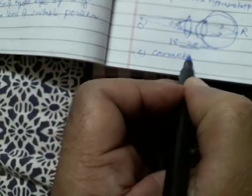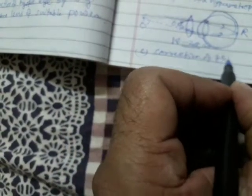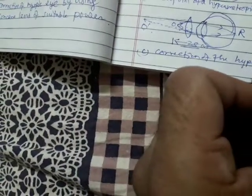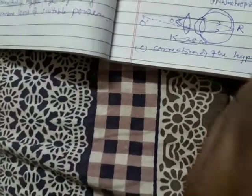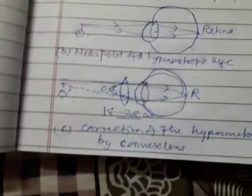So, this is called correction of the hypermetropia. Okay, correction of the hypermetropia by convex lens, convex lens of suitable power. Okay, in this way, it is correct.